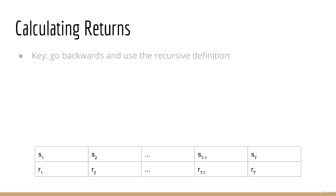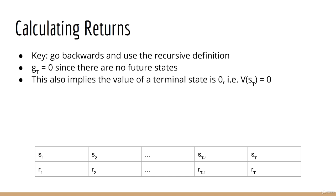Well, it's helpful to actually go backwards. For example, g of big T is zero. Importantly, note that the return is only the sum of future rewards. Since a terminal state is the end of an episode, that means there are no future states. No future states means no future rewards. Therefore, the return of a terminal state is always zero, and hence the value of a terminal state is also always zero.